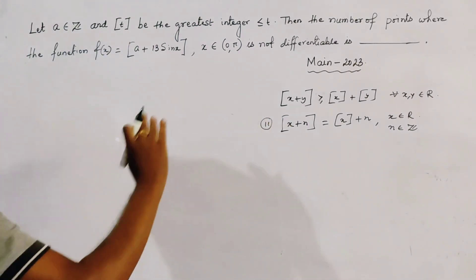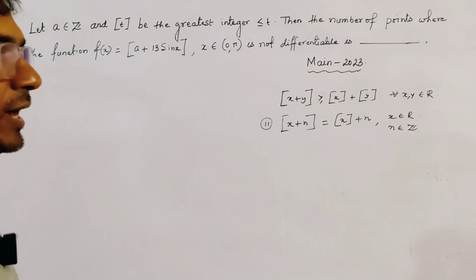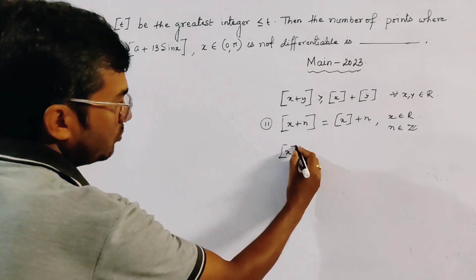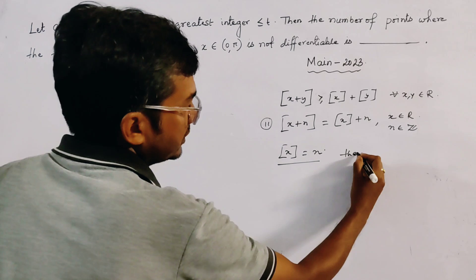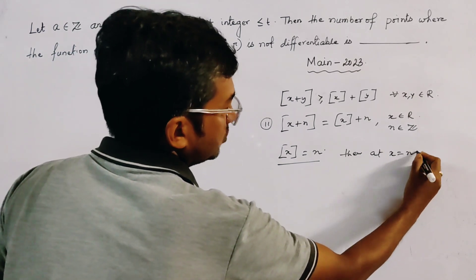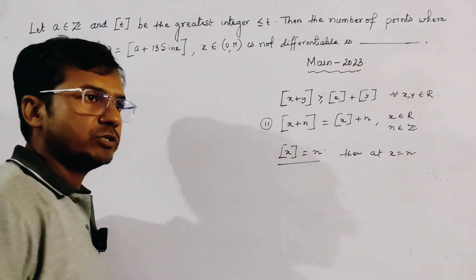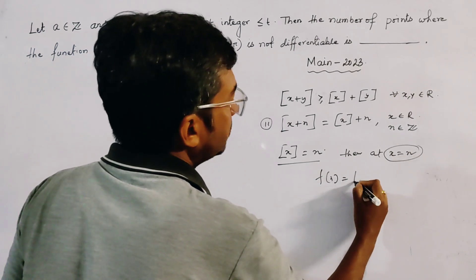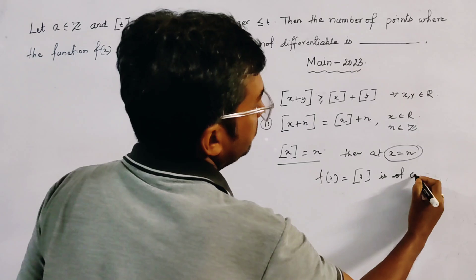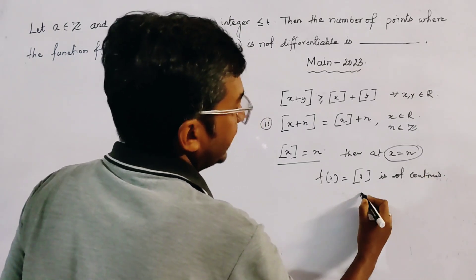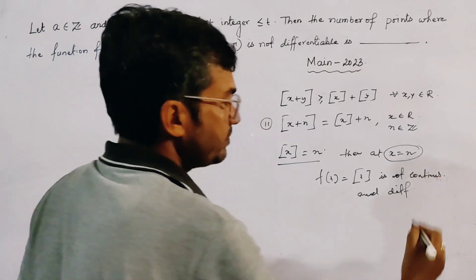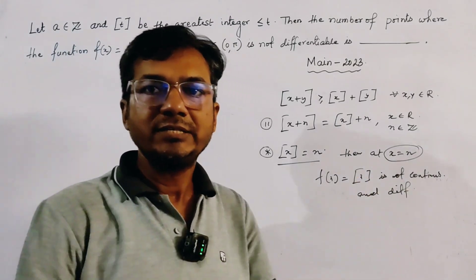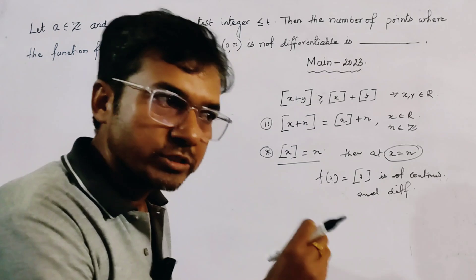We use this as the second property of the floor function. Another important property: if box(x) equals n — that is, at any integral point of x — the function box(x) is not continuous and not differentiable. We also use this property at points where box(x) is an integer.